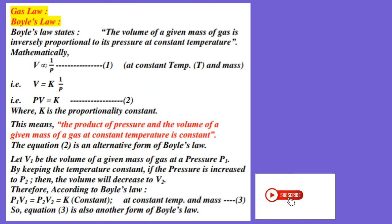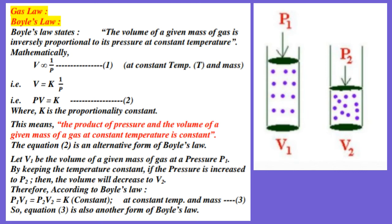The first mathematical form is V inversely proportional to P, at constant temperature and mass. The second mathematical form of Boyle's Law is PV equal to K. And the third mathematical form of Boyle's Law is P1V1 equal to P2V2 equal to K. This is at constant temperature and mass. All 3 equations have the same meaning.